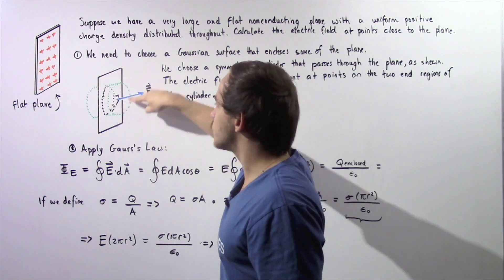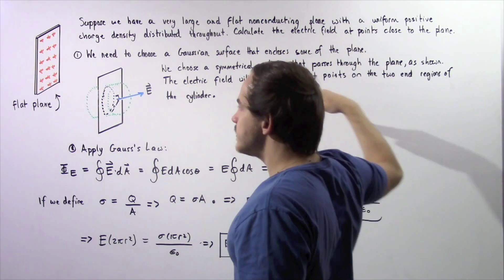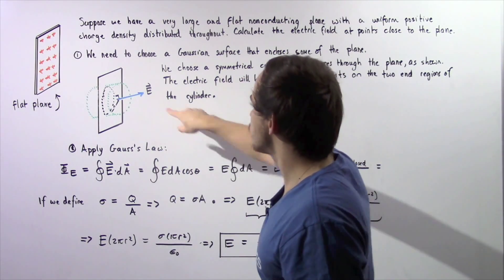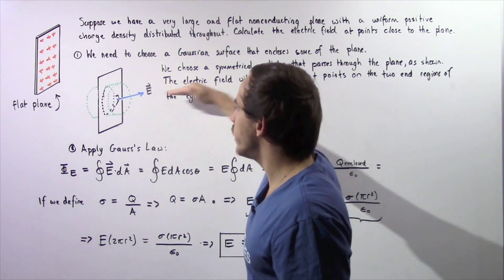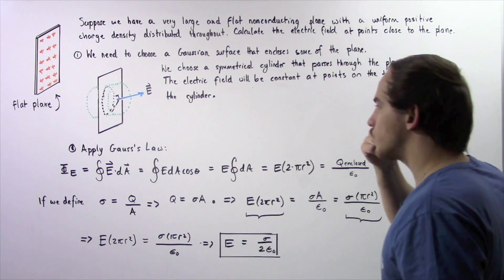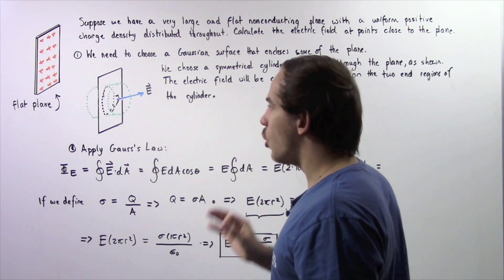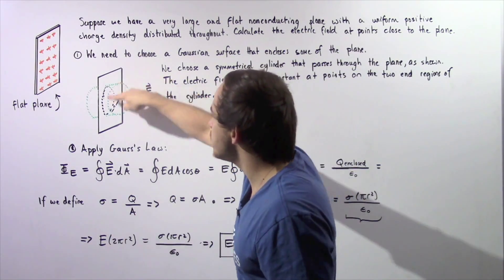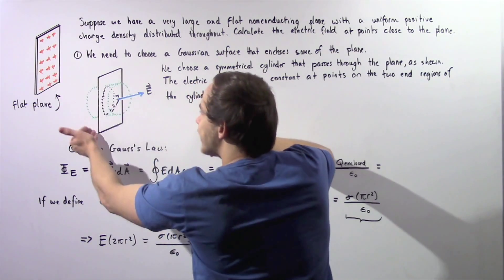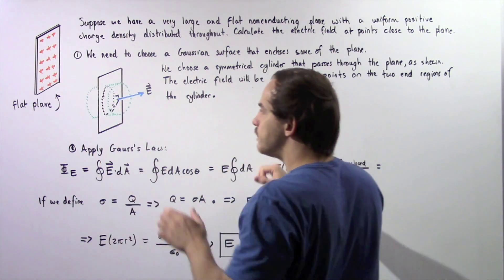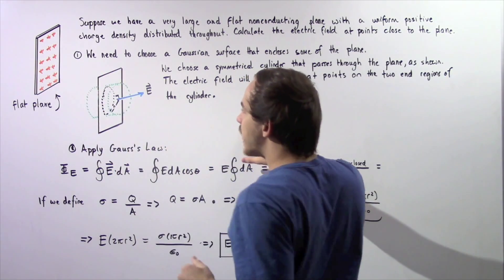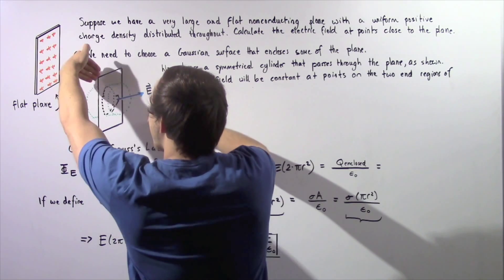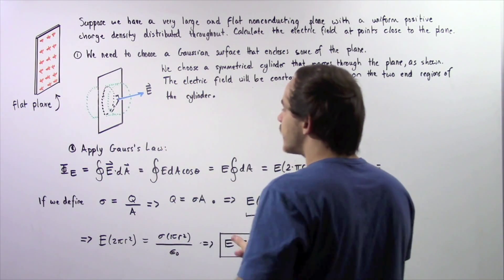The surface vector of this side points in this direction and it points at an angle of zero degrees with respect to our electric field. They point in the same exact direction. Notice we only have electric flux that is coming out of this side and the other back end. We don't have any flux coming out from the sides. So that means we only have to look at the surface area of this end and the other end.